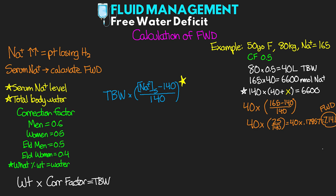We can check our work by adding 40 plus this free water deficit, giving us a total of 47.14. And if we multiply 47.14 times 140, lo and behold, we get our 6,600 millimoles of sodium. So in this case, we know that this lady is deficient over 7 liters of water that we would need to replace back into her in order to bring her sodium back down to the normal level and essentially give her the water that she needs.